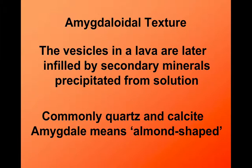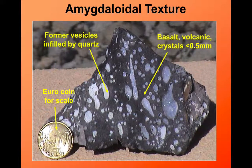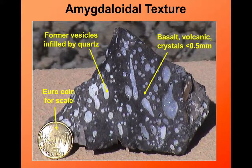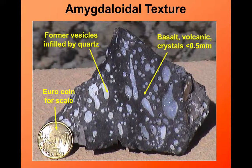Sometimes these vesicles get filled in. Water passing through the rock later on, or left behind when the rock crystallised, may have dissolved minerals in it, and these will actually fill up the vesicles with other minerals — perhaps minerals that weren't originally in the magma. These rocks, you've got to be careful not to interpret them as porphyritic. But if you look at the shape of the amygdales — these filled-in vesicles — you can see they're really quite different from the phenocrysts we saw in the porphyritic texture.